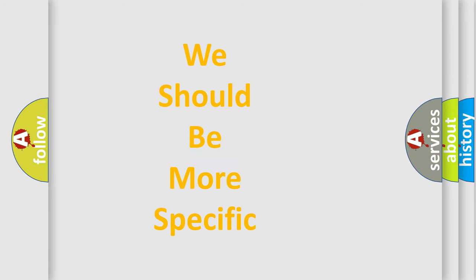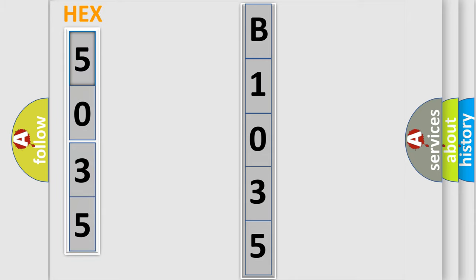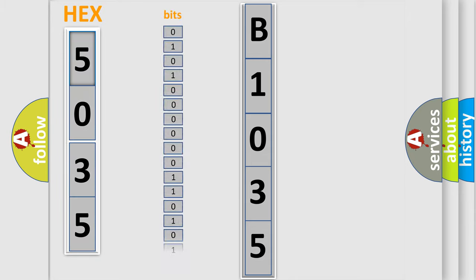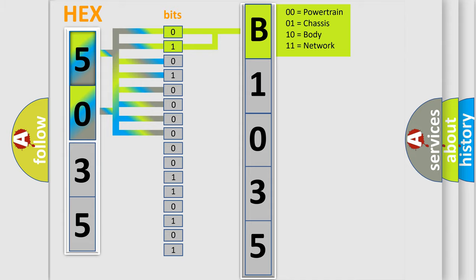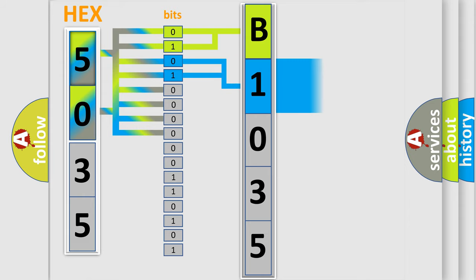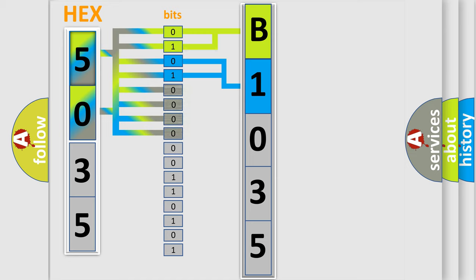The following demonstration will help you look into the world of software for car control units. The error code is split into two bytes consisting of 16 bits. One bit is the basic unit that each computer works with. The bit has two logical states: zero, low level, and one, high level. By combining the first two bits, the basic character of the error code is expressed. The next two bits determine the second character.